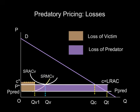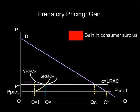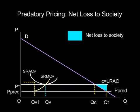The predator also makes losses in this stage. The price is P-Pred, while its average cost is equivalent to the long-run average cost, LRAC. So, total loss for the predator is given by the purple shaded area. However, there is also a gain from these lower prices, as consumers experience an increase in their consumer surplus. Overall, though, there is a net loss to society in this first stage of predatory pricing, and that's shown by the blue areas. This results from the gain in consumer surplus minus the losses incurred by the two firms.